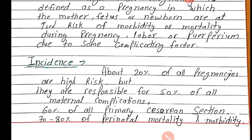Then 60% of all primary caesarean sections — jo saare caesarean sections hote hain unme se 60% high risk ki wajah se hote hain. Then 70 to 80% of perinatal mortality and morbidity — yeh jo high risk pregnancies hain yeh 70 to 80% prenatal mortality and morbidity ke liye responsible hoti hain.